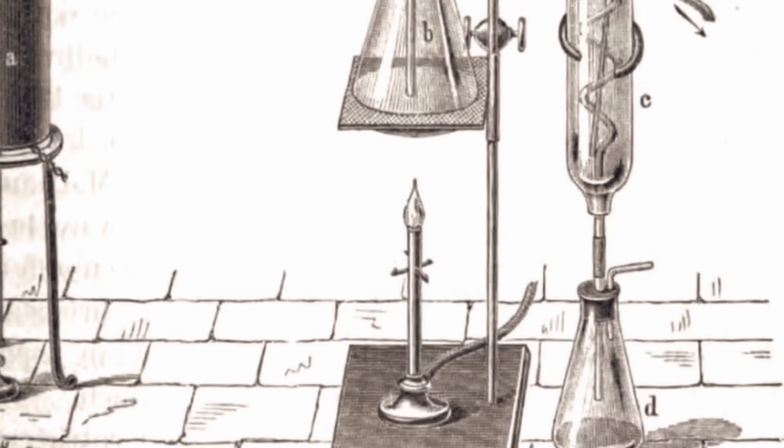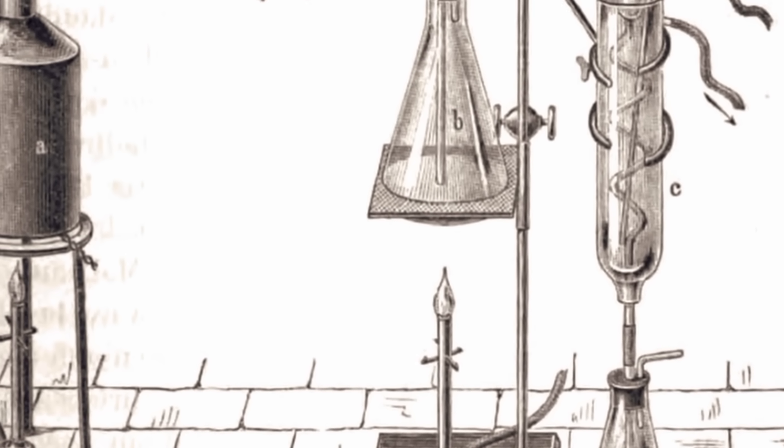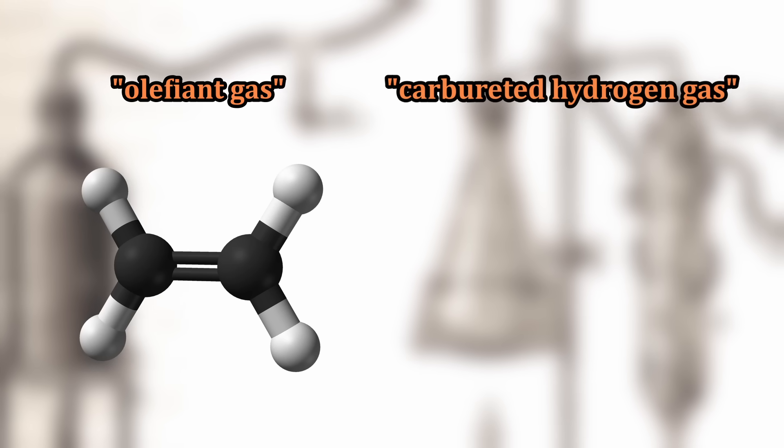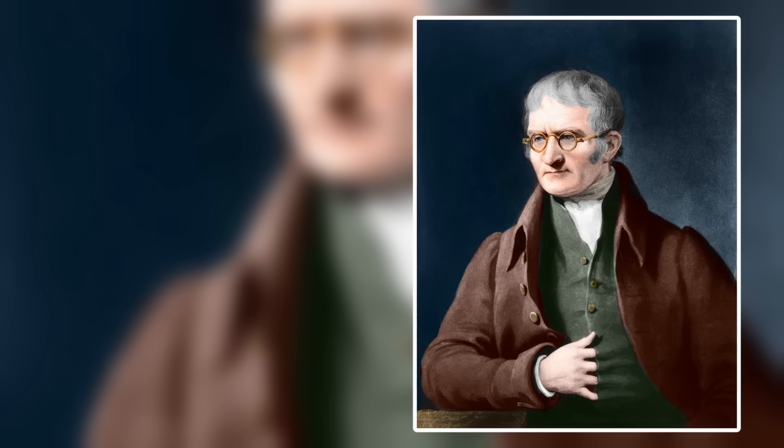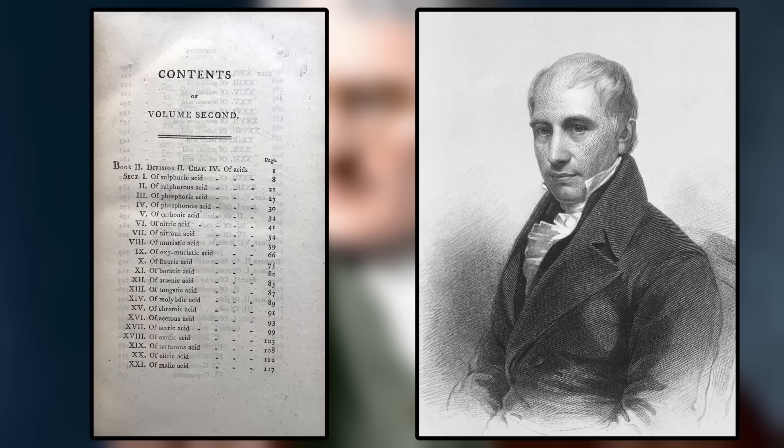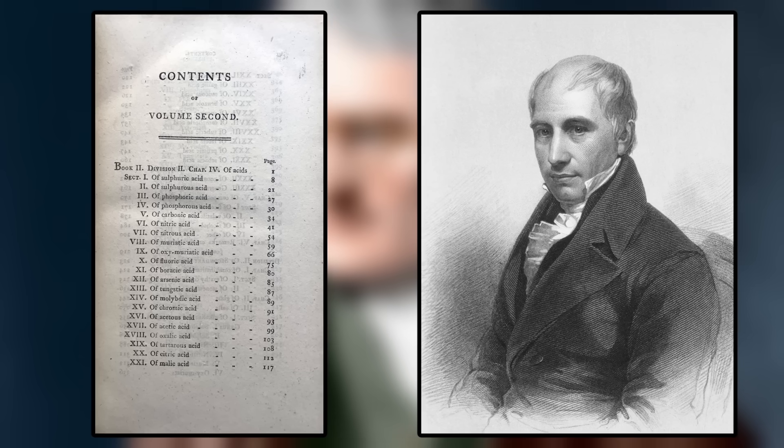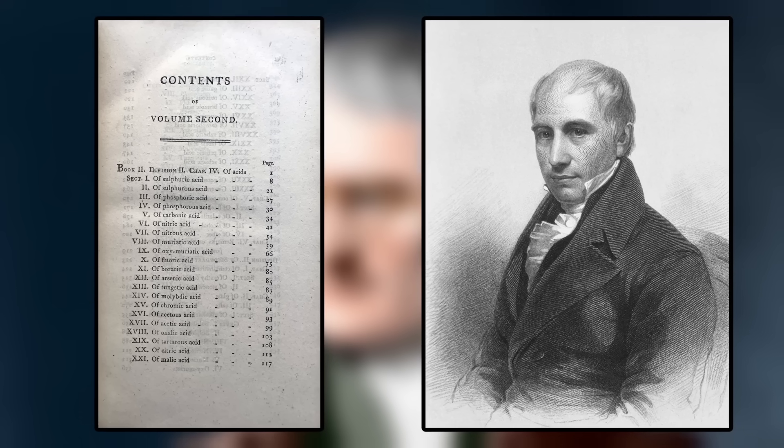Dalton himself in the coming years would go on to experiment with more chemical compounds, specifically olefiant gas, known today as ethylene, and also carbureted hydrogen gas, known today as methane. He shared his findings from these experiments with Thomas Thompson in 1804, who went on to publish Dalton's ideas in a book of his own entitled A System of Chemistry in 1807, giving full credit to Dalton.